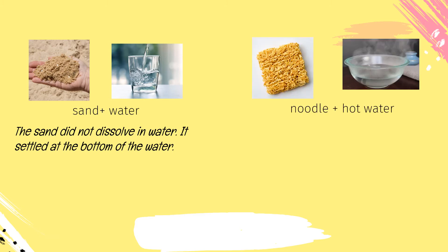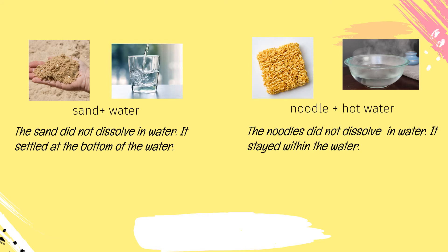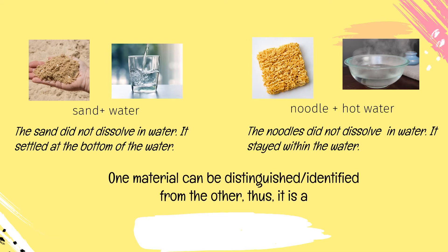How about combining sand and water? The sand did not dissolve in water — it settled at the bottom. How about putting together noodles and hot water? The noodles did not dissolve in water; they stayed within the water. One material can be distinguished or identified from the other, thus it is a heterogeneous mixture.